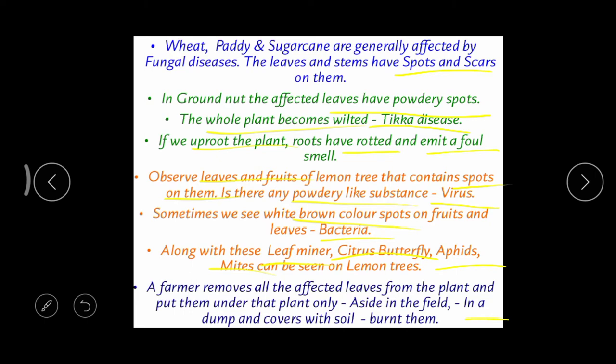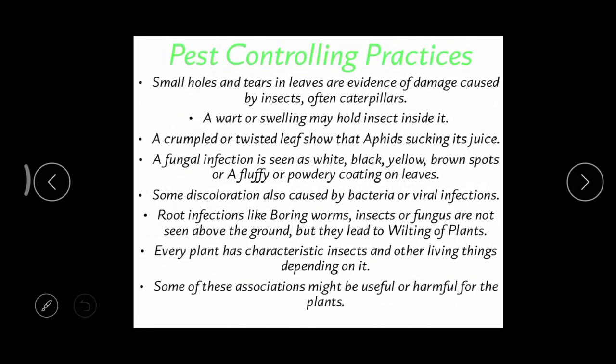In the first three cases, the disease or infection can spread to other healthy plants. Burning completely controls that. Whether it is a leaf, flower, stem, or root that is affected, we must burn the affected parts. This brings us to controlling practices.